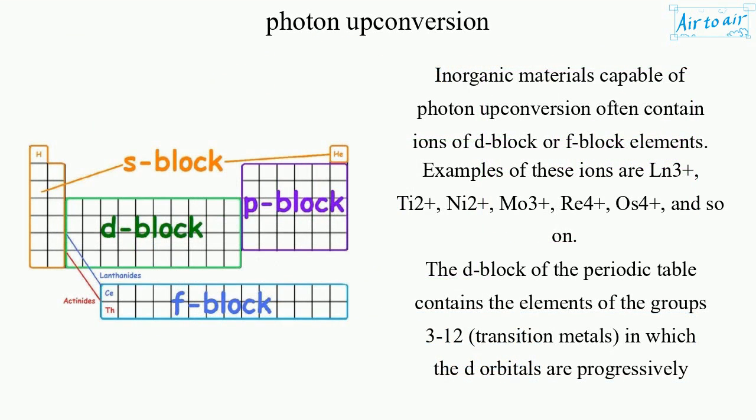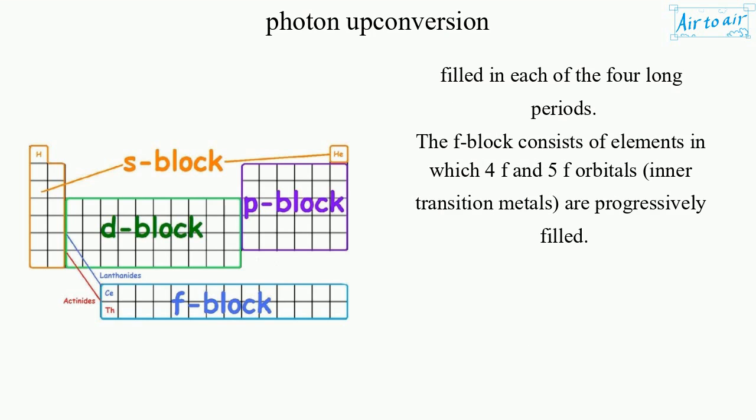Inorganic materials capable of photon-up-conversion often contain ions of D-block or F-block elements. Examples of these ions are Ln3+, T2+, Ni2+, Mo3+, Ri4+, Os4+, and so on. The D-block of the periodic table contains the elements of groups 3–12, the transition metals, in which the D-orbitals are progressively filled in each of the four long periods.